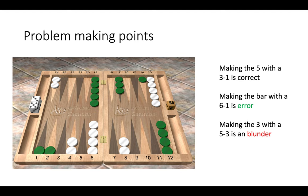So here, white has won the opening roll of a 4-2 and green has, again, split the back checkers to freeze white's 8-point. Here, again, making the 5-point is correct for white to have the 3-point prime, but making a 5-3 is a blunder and making the 6-1 bar point is an error.